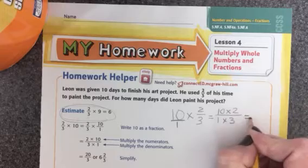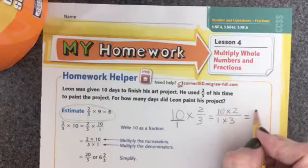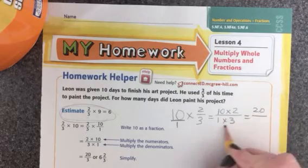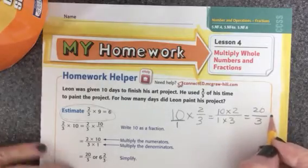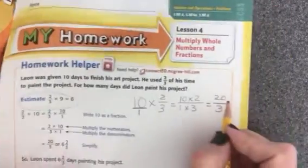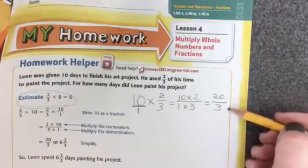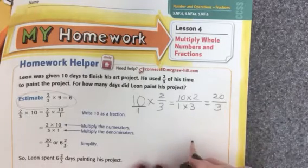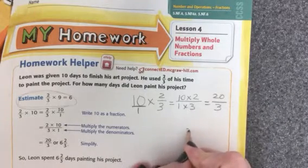So now let's figure it out. 10 times 2 is 20, and 1 times 3 is 3. So we have the answer, but this is an improper fraction. We need to simplify by finding a mixed number.